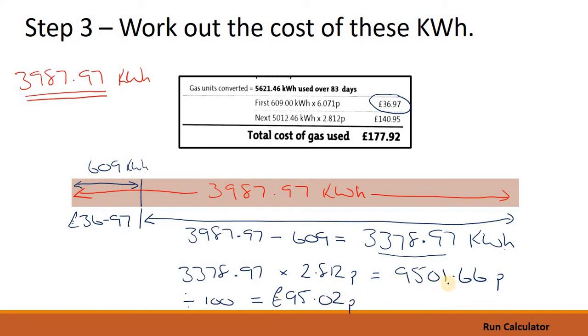And if we divide 9,501.66 by 100 what we get is 95 pounds and 2 pence. Now, I've rounded this up. If you've done this in a calculator you get 95.0166 but because we're talking about money we have to use the conventions of money. And the convention in money is we always just have two numbers after the point. So what we've worked out is that the remaining 3,378.97 kWh costs us 95 pounds and 2 pence.